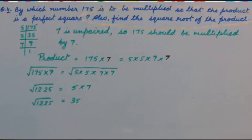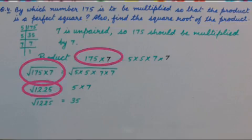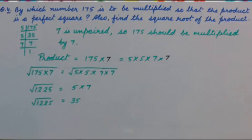Also find the square root of the product. It means first we have to find the product. Product is 175 into 7 that is 1225.